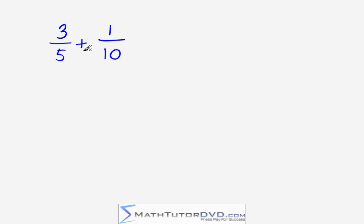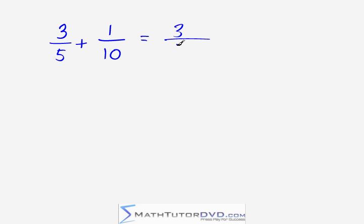Our second problem is three-fifths plus one-tenth. Again, our goal is to find a way to make these denominators match so we can add them. Here I have a five and a ten. The easiest way to do this is to multiply five times two, which will equal ten, so these denominators will match. So I take three-fifths and multiply the bottom by two and the top by two, which gets me a ten to match the other fraction.